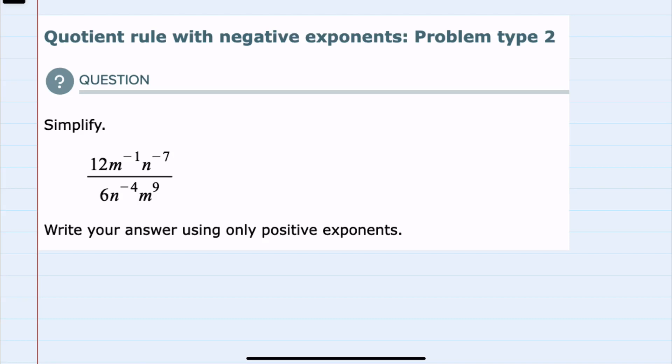In this video I'll be helping you with the Alex problem type called Quotient Rule with Negative Exponents, Problem Type 2. We're asked to simplify this expression and to write our answer using only positive exponents.